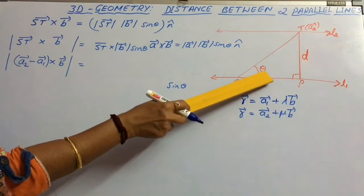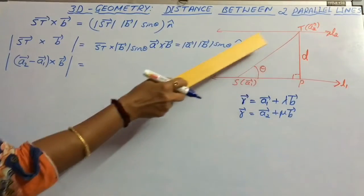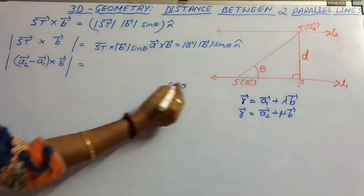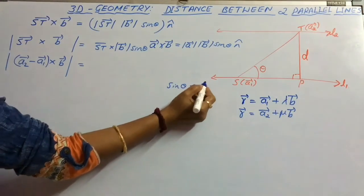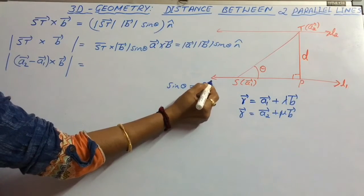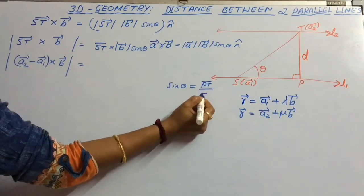From the diagram, sin theta equals opposite by hypotenuse. So sin theta equals opposite side Pt divided by hypotenuse St.